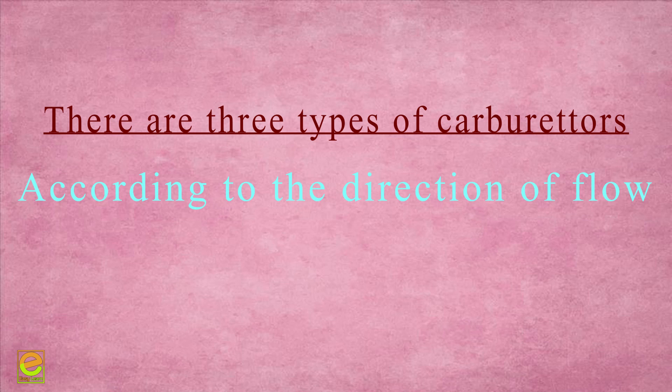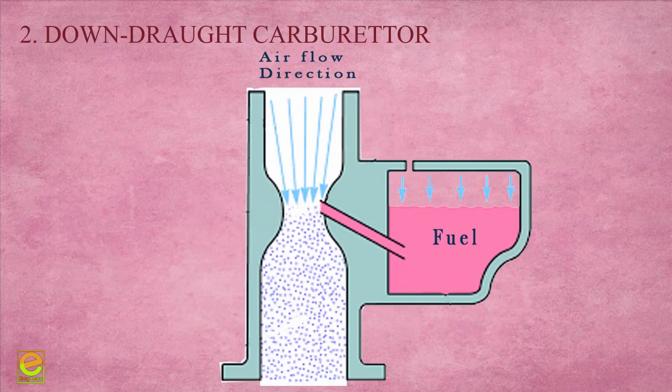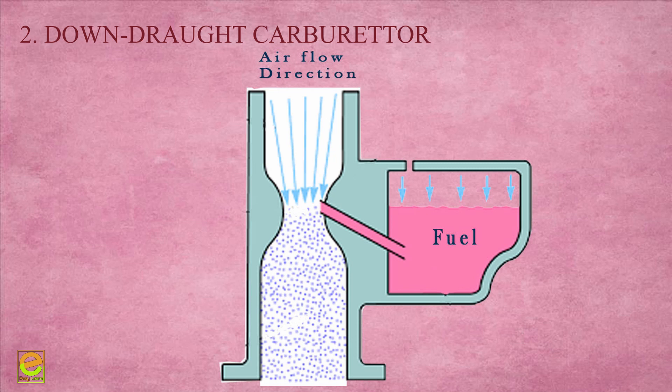There are three classifications by draft: 1. Updraft Carburetor, 2. Downdraft Carburetor, 3. Horizontal or Side Draft Carburetor.